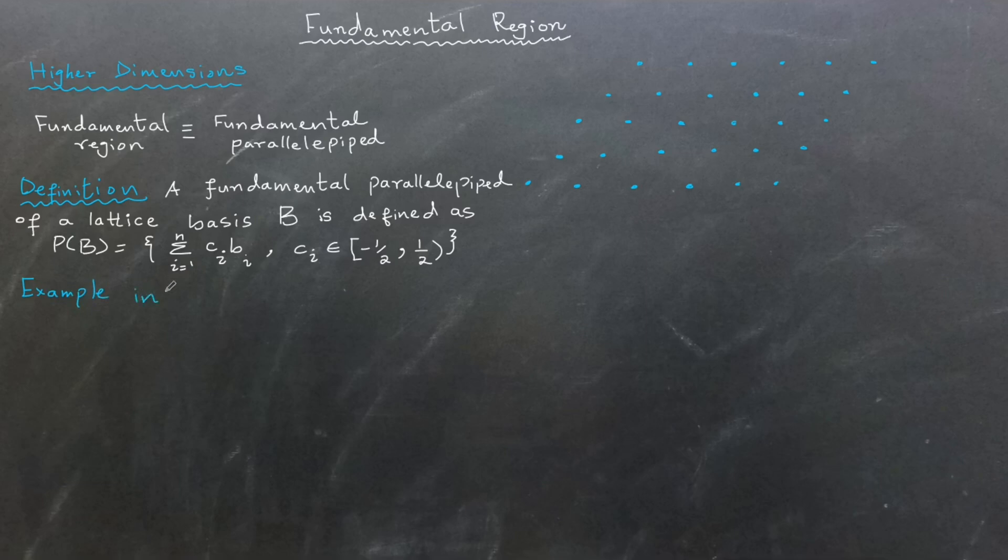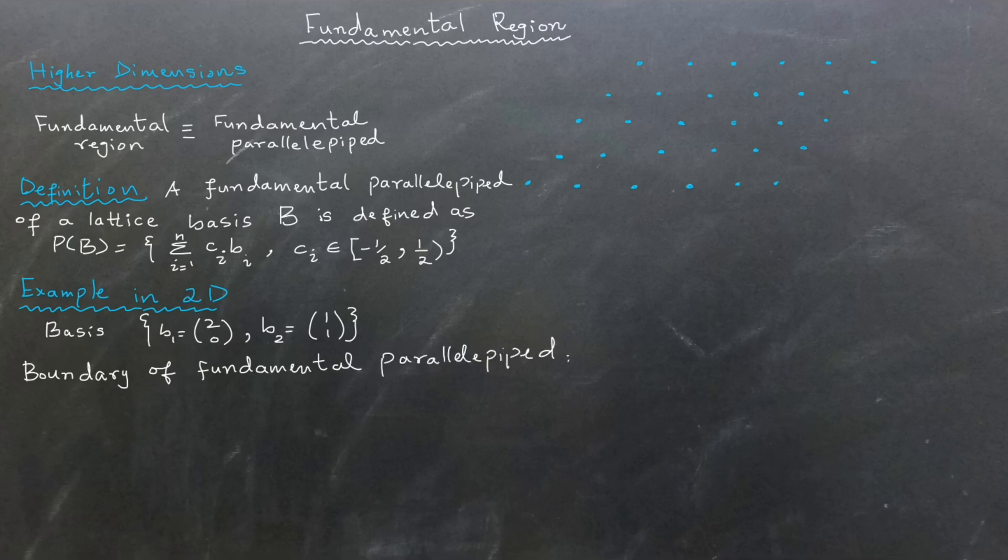Let's understand this using an example. Suppose we are given the basis vectors (2, 0) and (1, 1). To calculate the boundaries of a fundamental region, we form linear combinations of these basis vectors with coefficients ranging from negative 1/2 to just under 1/2. Even though positive 1/2 is excluded, points very close to it will appear on the boundary. In this example, the boundaries of a fundamental region would be marked by the points: